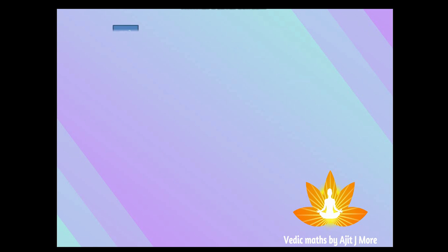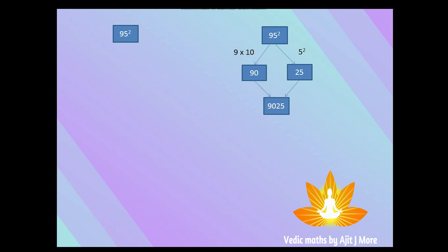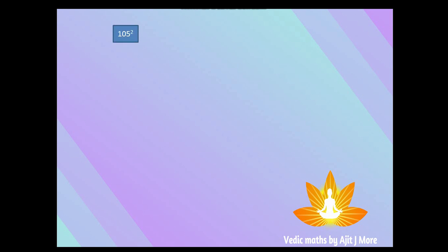Let's take 95 squared. What comes before 5? Nine. Multiply 9 with its consecutive digit, 10 — nine into ten is 90. Five squared is 25. Combine both and you get 9025.